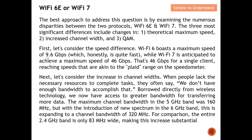First, let's consider the speed difference. Wi-Fi 6 boasts a maximum speed of 9.6 gigabits per second, which is already very fast — you can download a movie in just a few seconds. Wi-Fi 7 is anticipated to achieve a maximum speed of 46 gigabits per second. This number is amazing; in less than a second you could download a whole movie. For a single client, 46 Gbps is essentially beyond the range of most speed meters.